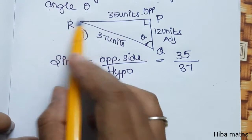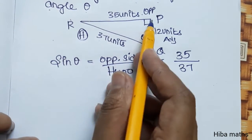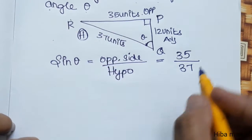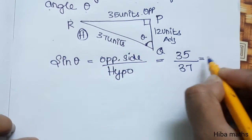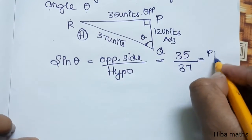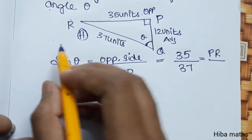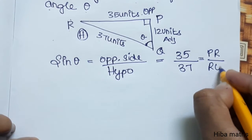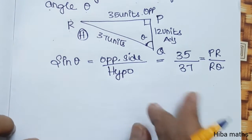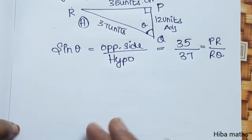Now we can write the naming. We can write the opposite side as PR, and the hypotenuse as RQ. That's because we write the value using the actual vertex labels.